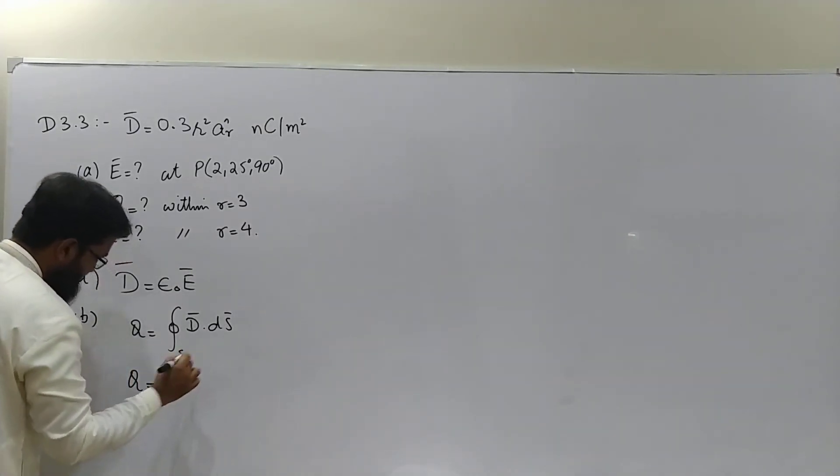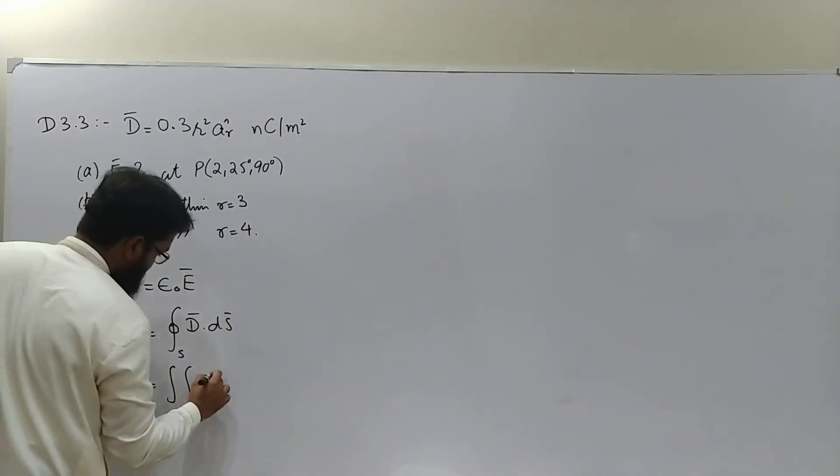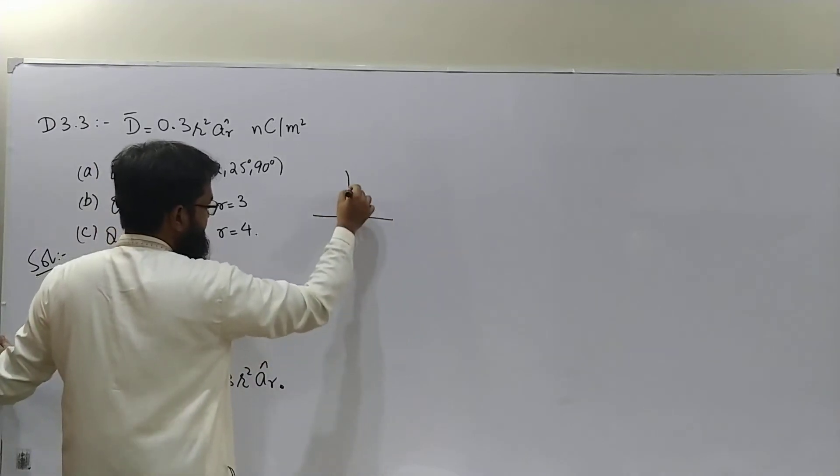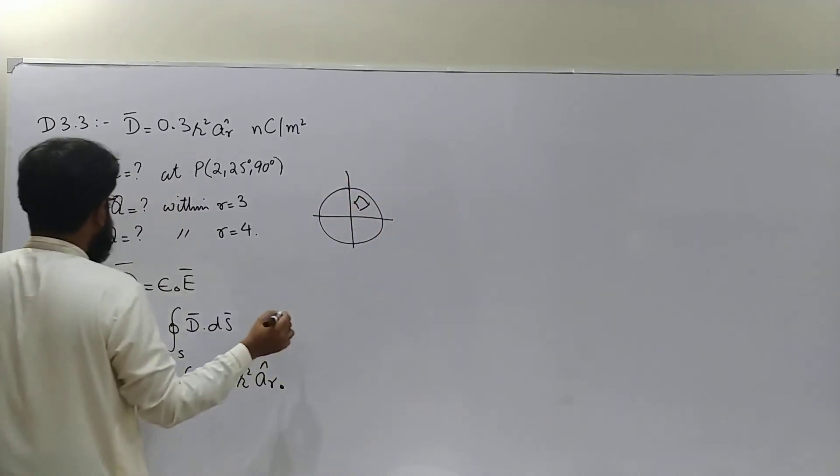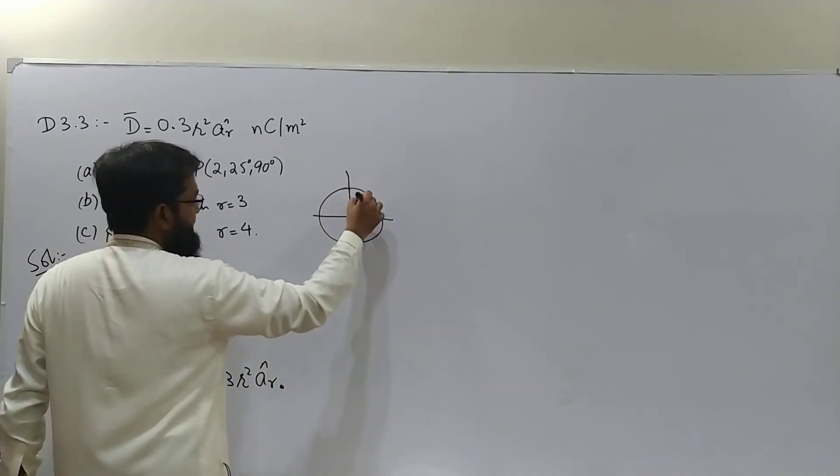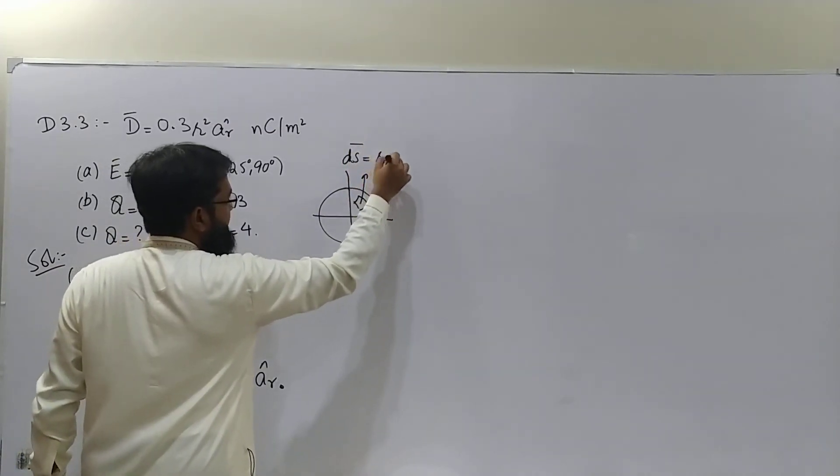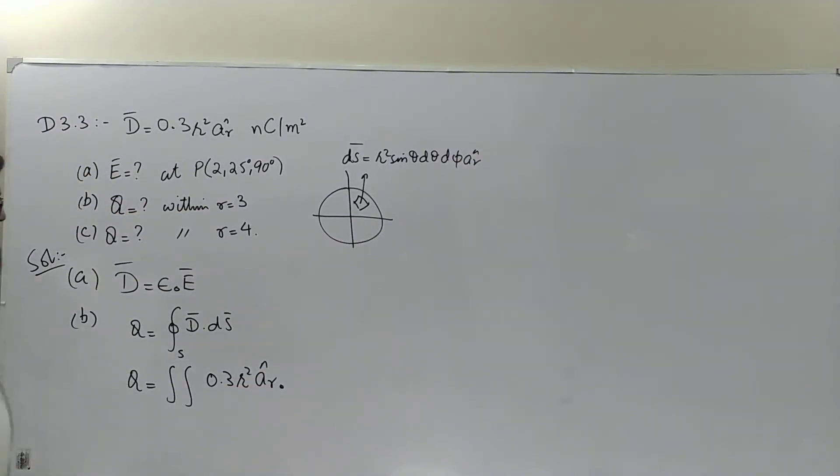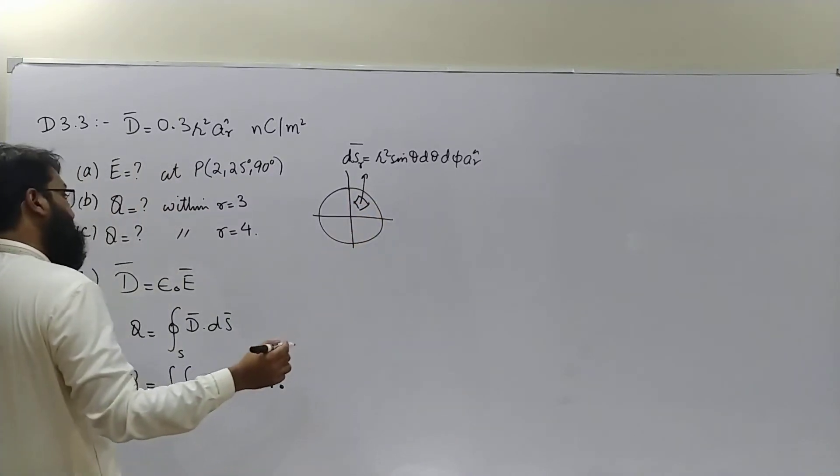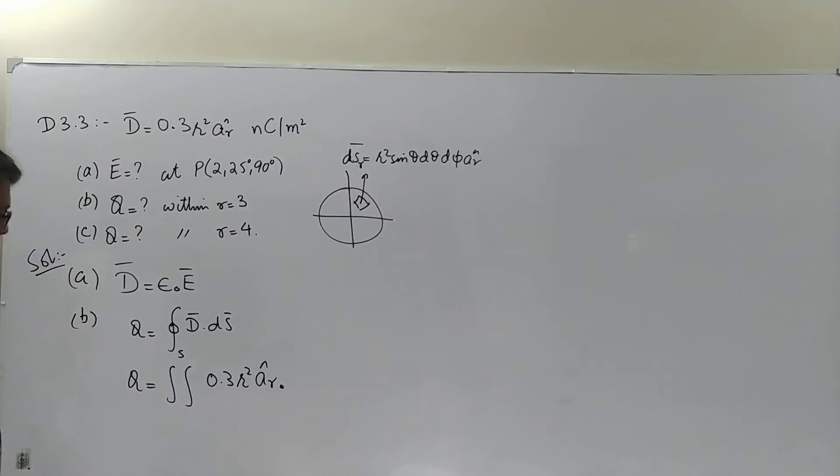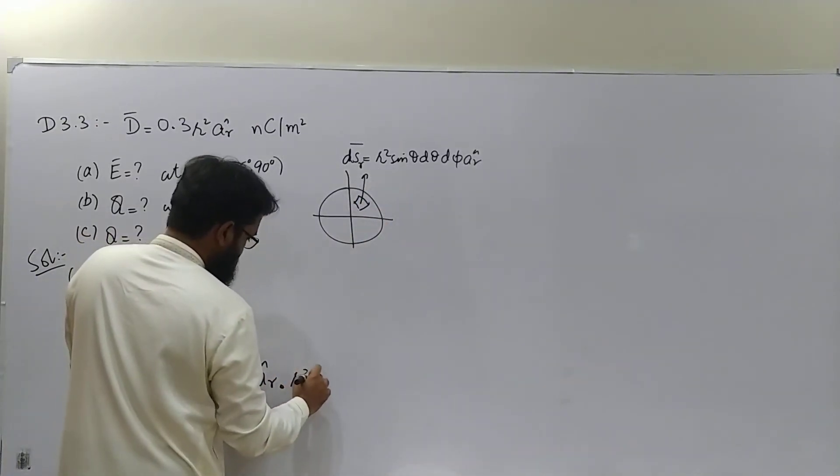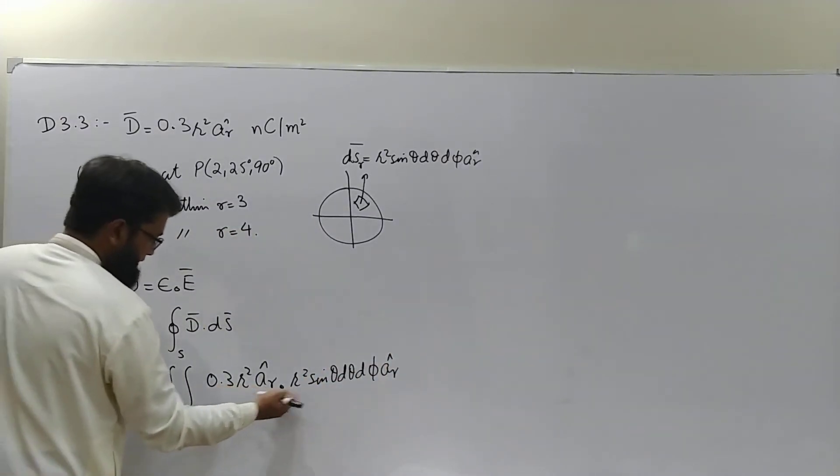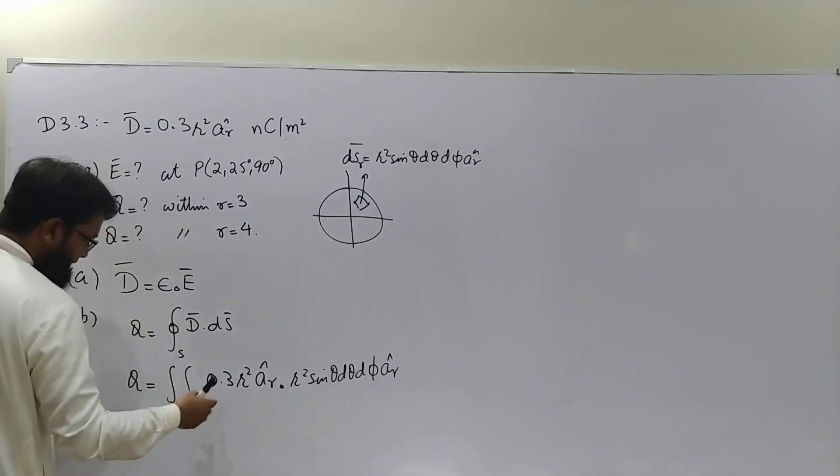Let's proceed. Double integral, D is 0.3 R square. This is a sphere and if I want to take a patch on this sphere, this will give me R square sine theta D theta D phi AR. We need the formula for the patch on the sphere for which R is constant. So replace this ds: R square sine theta D theta D phi AR. Carry out the dot product.